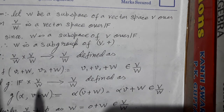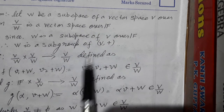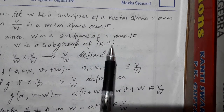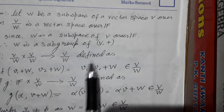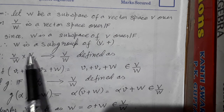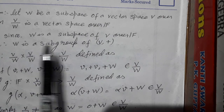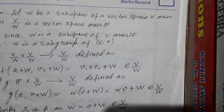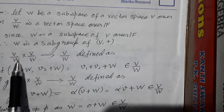If W is a subspace, W is also a subgroup of V under addition. V is an abelian group, so every subgroup of an abelian group is normal. So we can define the quotient group here, because W is a normal subgroup of V.